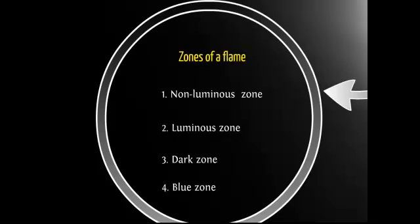The next zone is the luminous zone. It is the region of partial combustion and is a moderately hot zone. Then we have the innermost coldest dark zone, which consists of hot vapour. It is also called the zone of no combustion.